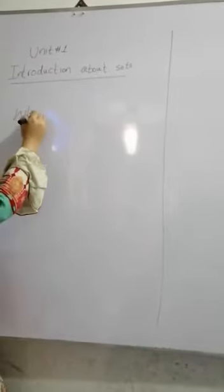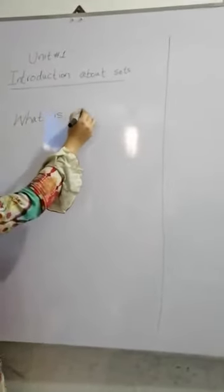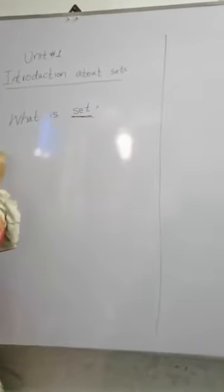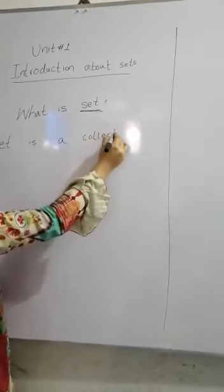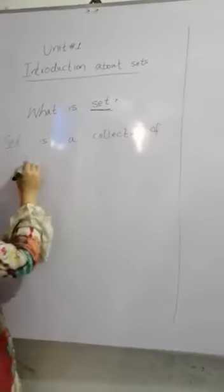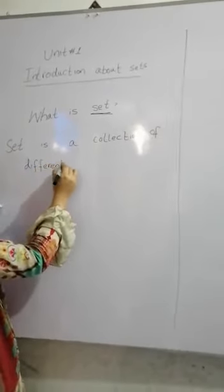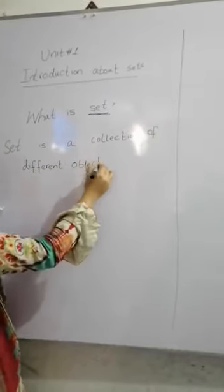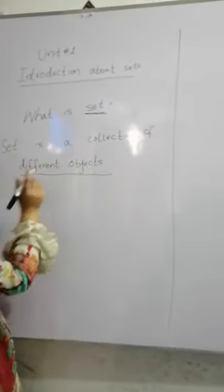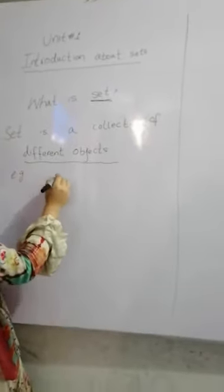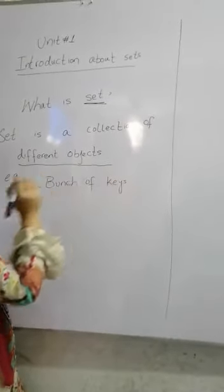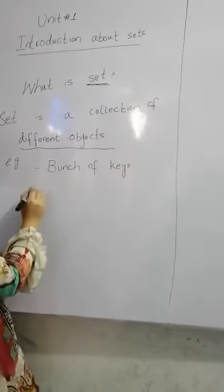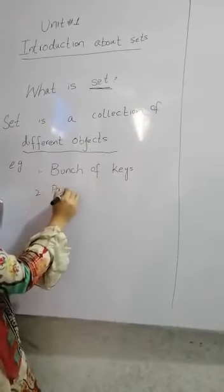First we will discuss the word 'set'. What is a set? A set is a collection of different objects. For example, a bunch of keys. Another example: a pack of cards.